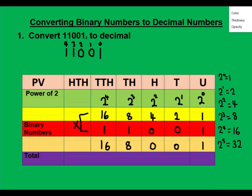The next thing is to add up everything. We have 16 plus eight plus zero plus zero plus one. 16 plus eight gives 24. 24 plus one gives 25. So the total is 25 to the base of 10. My answer here is 25.